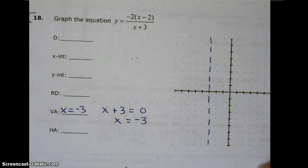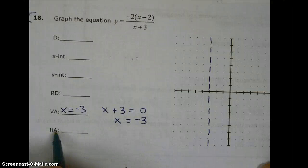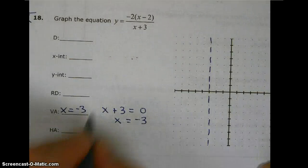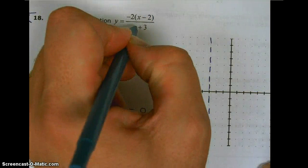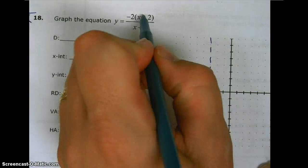All right, next, a horizontal asymptote. For a horizontal asymptote, we have to look at the degree of the numerator and the degree of the denominator. Notice the degree of the numerator is 1. The degree of the denominator is also 1.